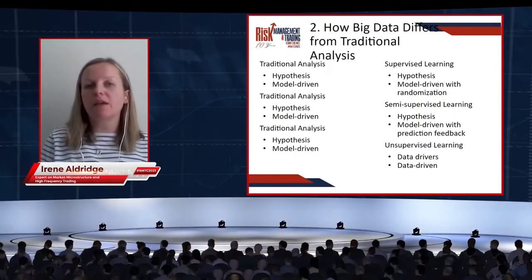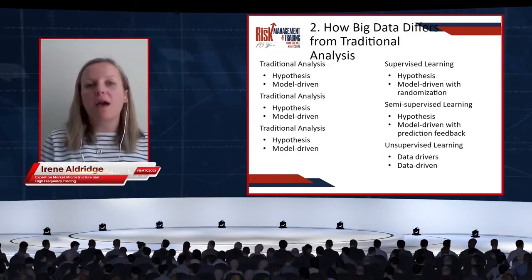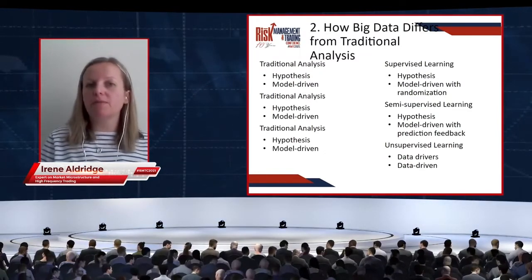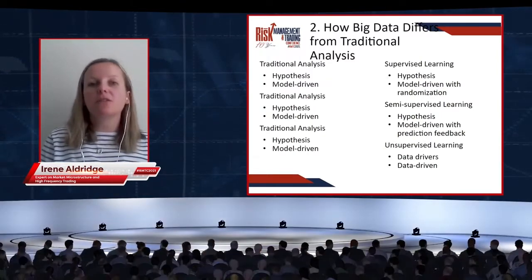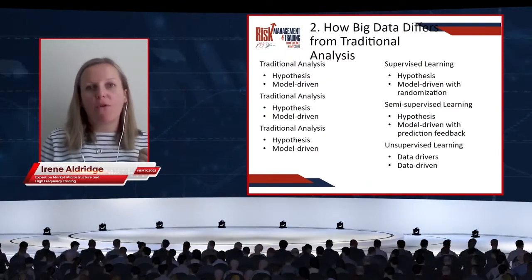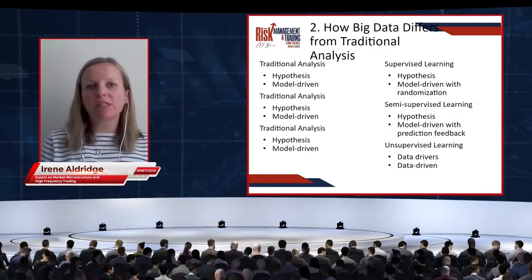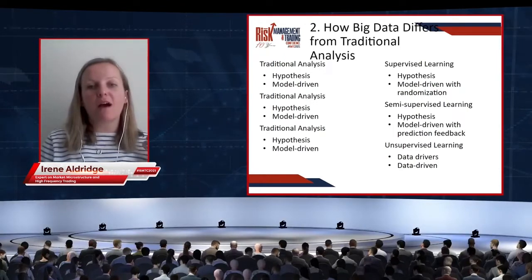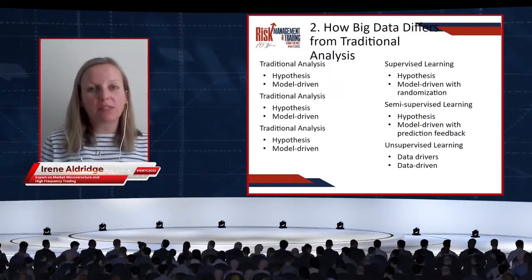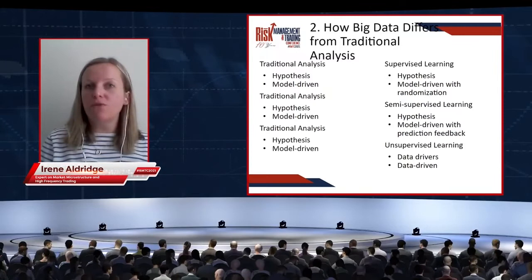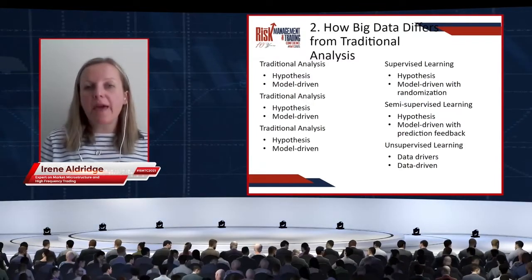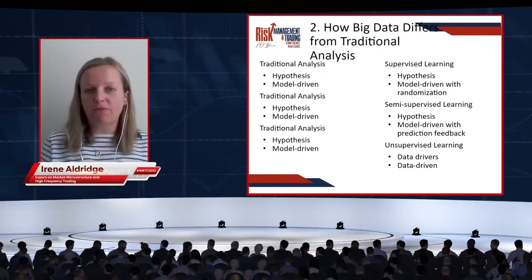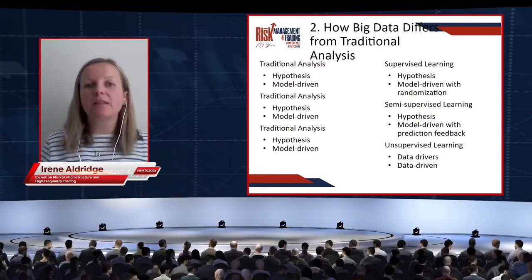This was developed mostly at companies like Facebook and Google, and it was used to classify images. For example, Facebook has a policy that no offensive images are allowed, but it was too cumbersome for a person to check every single image all the time. So they came up with a system that looks at a few images classified by a person and then expands this to all other images. That's semi-supervised learning.